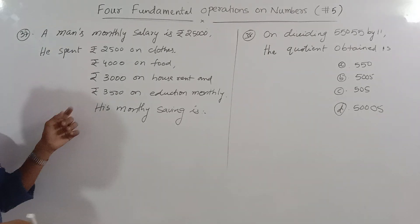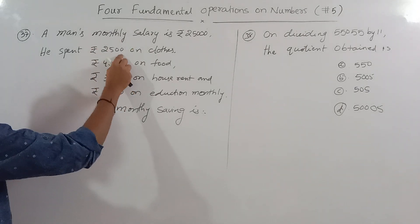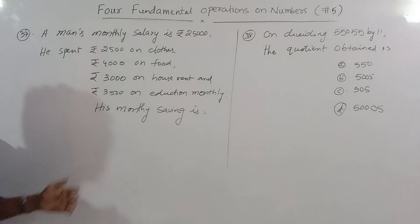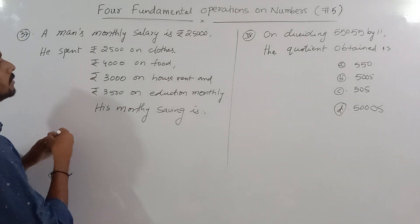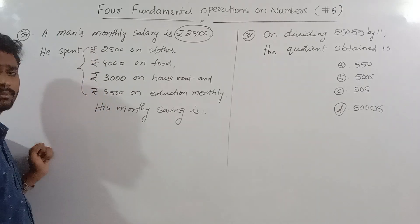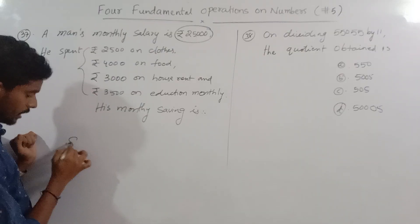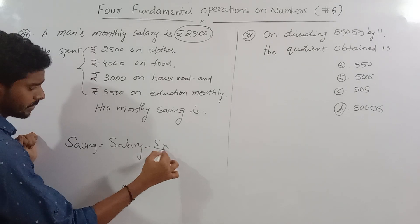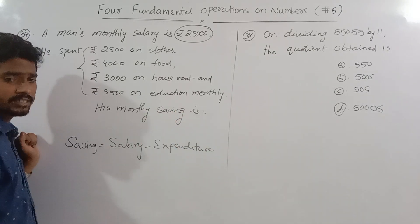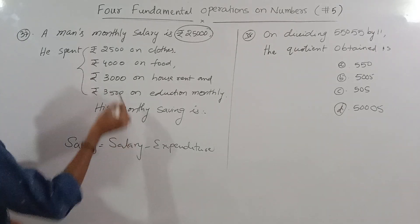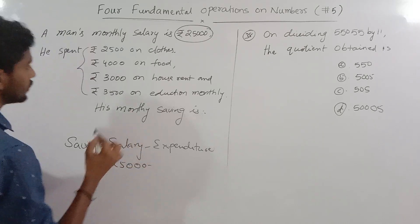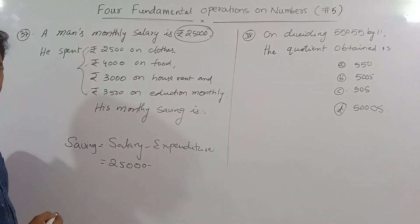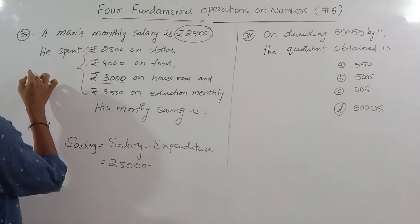A man's monthly salary is 25,000. He spent 2,500 on clothing, 4,000 on food, 3,000 on house rent, and 3,500 on education monthly. Total expenses: 2,500 plus 3,500 is 6,000; plus 4,000 is 10,000; plus 3,000 is 13,000. Monthly savings equals salary minus expenses: 25,000 minus 13,000.